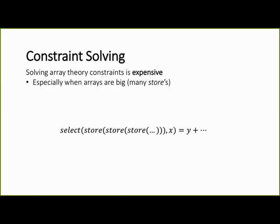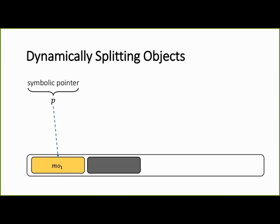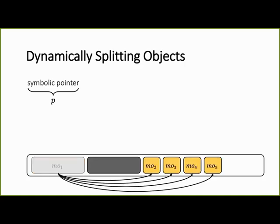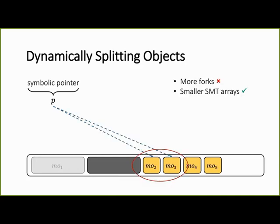Solving array theory constraints is known to be expensive, especially when we have big arrays with many store expressions. Let's say we have this symbolic pointer P, which points to MO1. If MO1 is a big object, then the accessed value will be this select expression over the big SMT array of MO1. What we can do in this case is relocate the original object MO1 and split it to smaller objects. Now when we resolve again our symbolic pointer P, it may point, for example, to MO2 and MO3, which means that we have more symbolic states and more forks. But on the other side, we get smaller objects, which come with smaller SMT arrays.